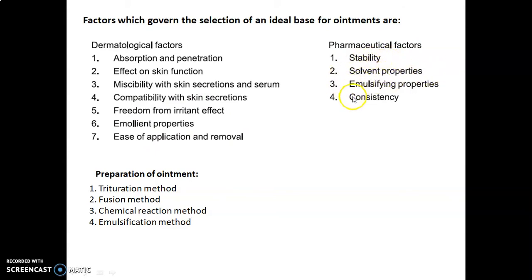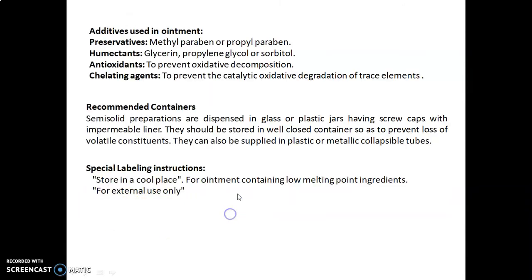Pharmaceutical factors include stability, solvent properties, emulsifying properties, and consistency. Regarding preparation of ointment, there are four methods: trituration method, fusion method, chemical reaction method, and emulsification method. The additives used in ointment include preservatives such as methylparaben or propylparaben, humectants such as glycerine, propylene glycol, or sorbitol, antioxidants which are used to prevent oxidative decomposition, and chelating agents used to prevent catalyzing oxidative degradation by trace elements.